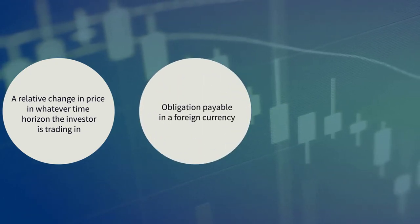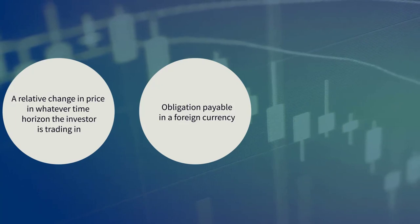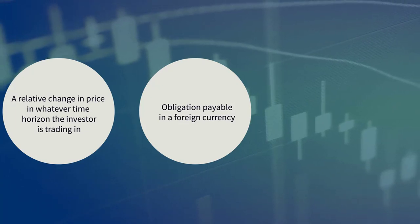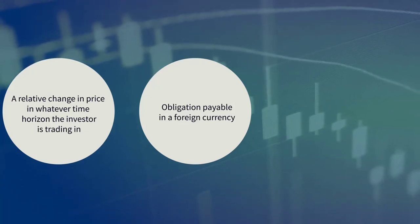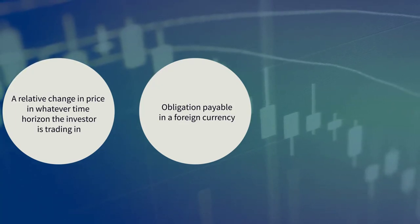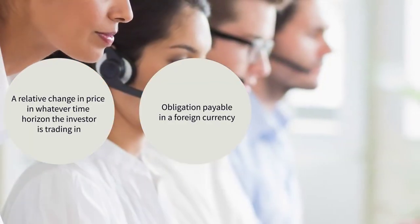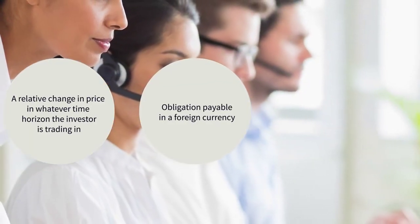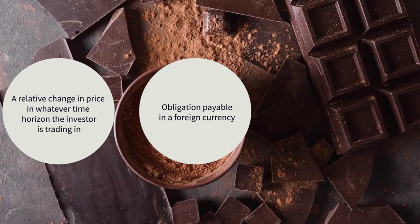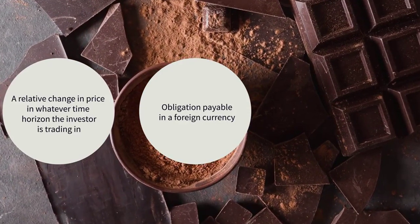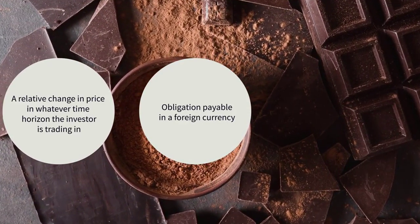They have an obligation in the bought unit — a payment due for goods and services. Such examples might include a US domiciled corporation that has to pay overseas call center employees monthly, or a UK chocolate manufacturer that buys cocoa from a Swiss refiner each quarter.